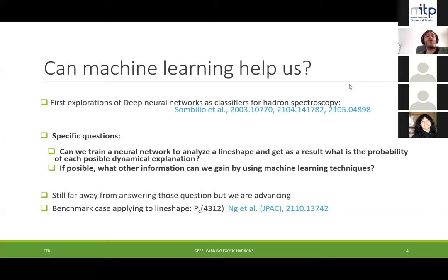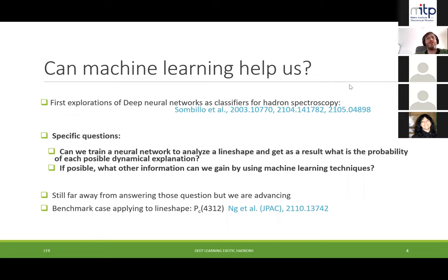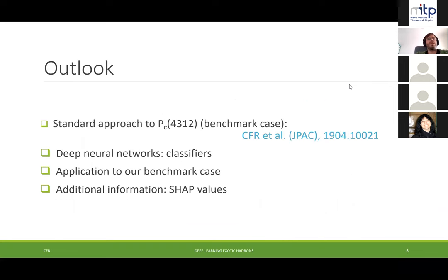That means taking the data and simultaneously analyzing the different options. And if possible, can we gain any other information? There are a lot of machine learning techniques you can exploit once you've applied a neural network to data. We are still far from fully answering those questions, but we're advancing. The first thing we did was take the line shape of the Pc(4312) and try to analyze it with these techniques — in a limited way to be honest, as a benchmark to see if it's worth moving forward.